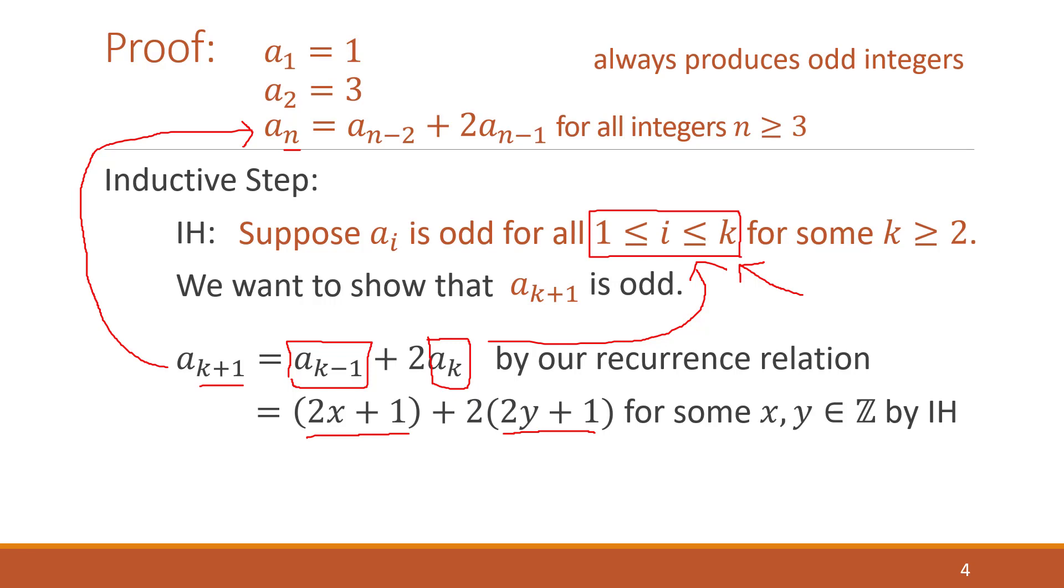And now this becomes a matter of algebra. So if we simplify a little bit and distribute that two, then what we can do is we can start doing some factoring. We can factor out a two out of these three terms and leave that one at the end. And now we can go through those steps to turn this into a recognizable integer so that this fits the definition of an odd number as well.